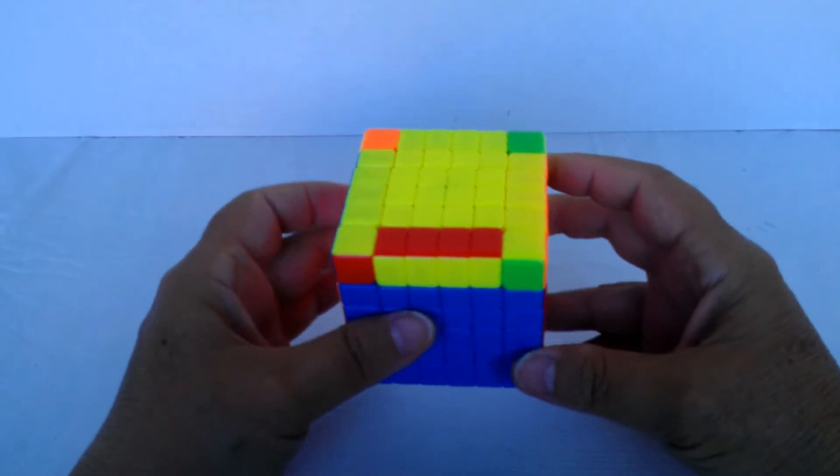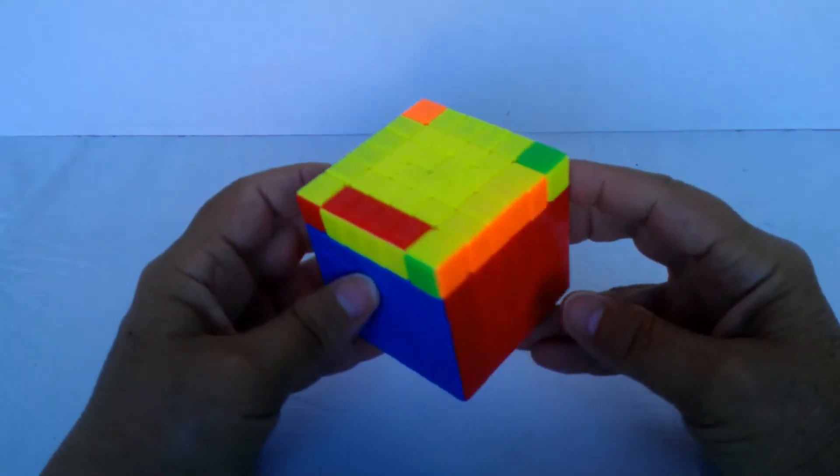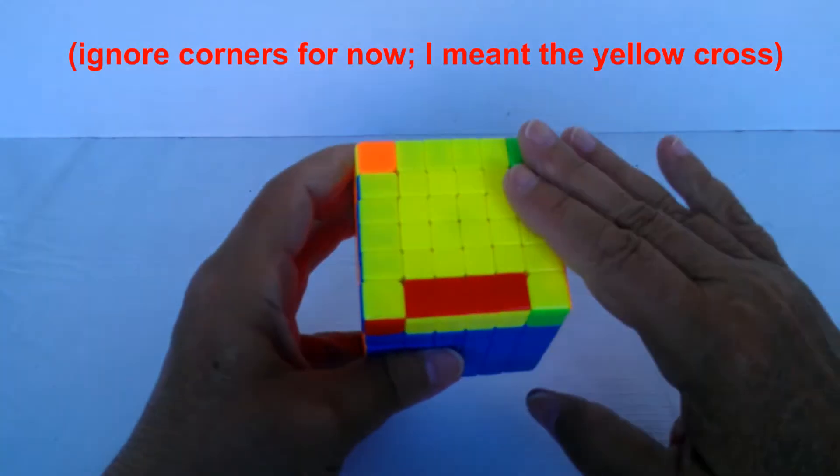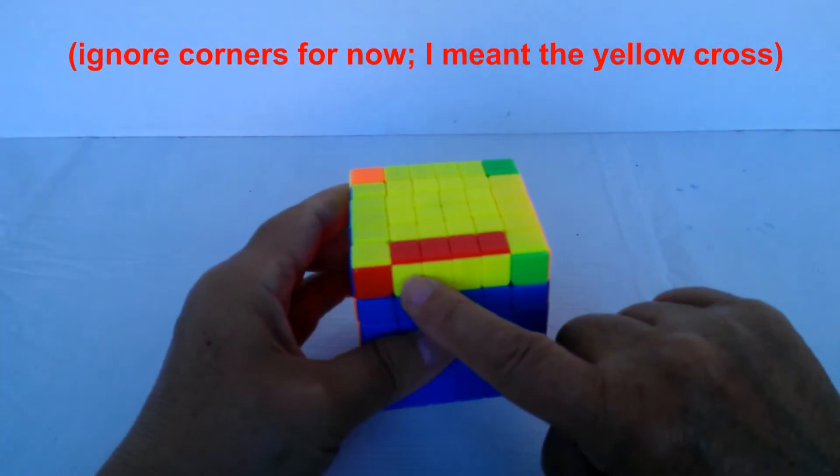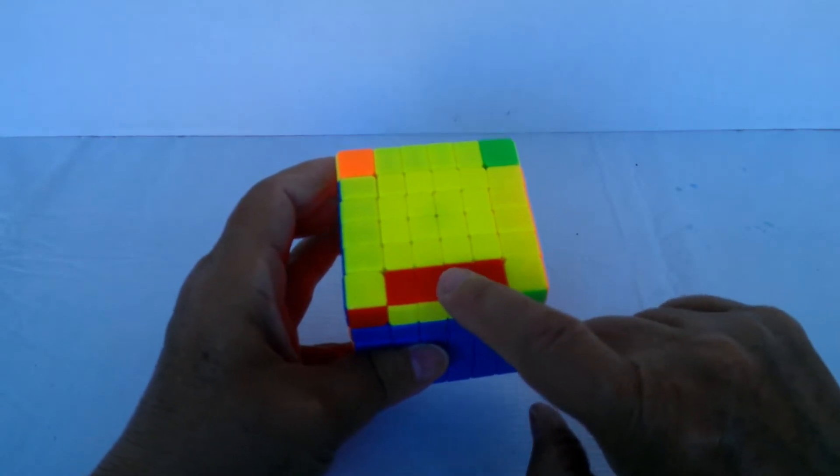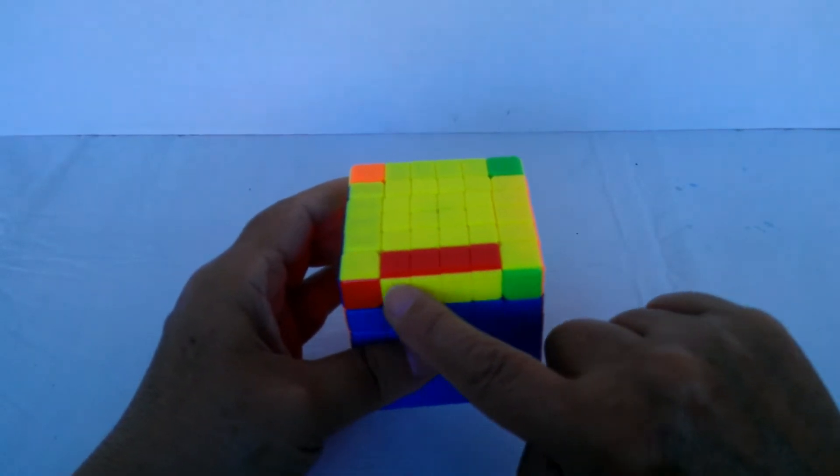We've done this parity move before in the 4x4, and this can happen on even cubes when you've got all of the yellow oriented on the top except for one edge. Remember this edge consists of four separate pieces, but this is basically the edge.